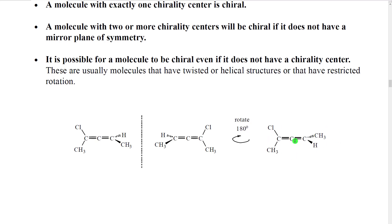Now we take this molecule and slide it over. We can easily line up the chlorine, the carbon, the methyl group, this carbon, and that carbon — those will totally superpose. However, the methyl group on this structure is aligned with a hydrogen, and the hydrogen is aligned with a methyl. So these two are not superposable. Mirror images that are not superposable means that they are chiral.